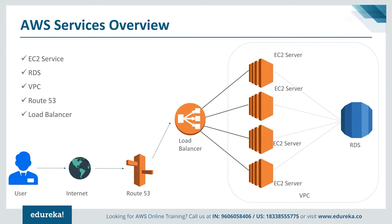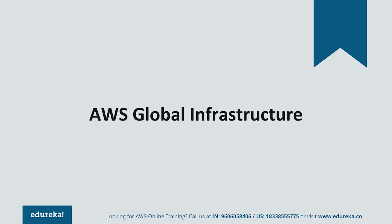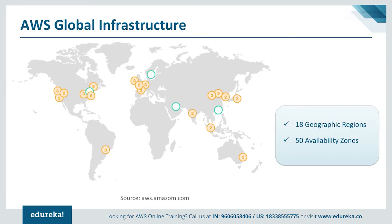Moving forward, let's discuss the global infrastructure that AWS has to offer. AWS provides these services throughout the globe and has a global presence. The orange dots are the regions that AWS has. Each region has multiple zones, and zones are nothing but huge data centers with a lot of servers. In all, there are 18 geographical regions around the world, and in those regions we have around 50 availability zones — 50 huge data centers around the world at your disposal.